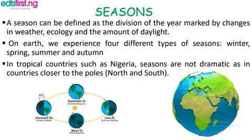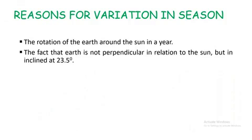The reason for variation in seasons: one is the rotation of the Earth around the Sun in a year, and the fact that the Earth's axis is inclined at 23.5 degrees in relation to the Sun.